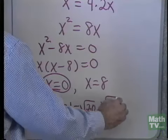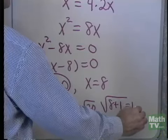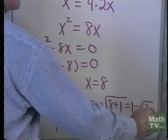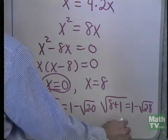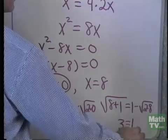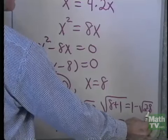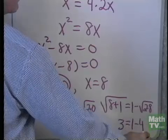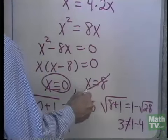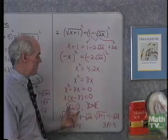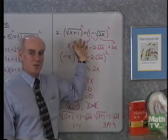Let's try x equals 8 in the original equation. Square root of 8 plus 1 equals 1 minus square root of 2 times 8. 8 plus 1 is 9, the square root of which is 3. And 1 minus square root of 16 — 2 times 8 is 16, the square root of which is 4 — so I end up with 3 equals negative 3. That's not true. So 8 is an extraneous solution. The only solution to this equation is x equals 0.